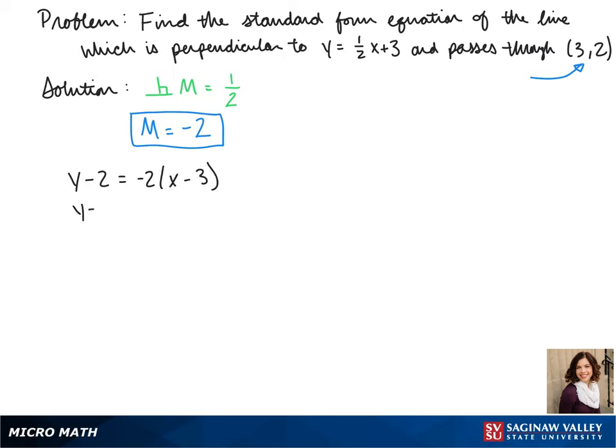We distribute the negative 2 to both terms, and that gives us y minus 2 equals negative 2x plus 6. We add 2 to the other side, and we get y equals negative 2x plus 8.